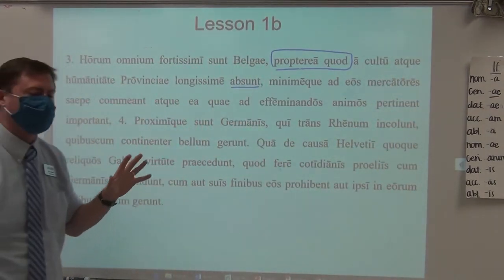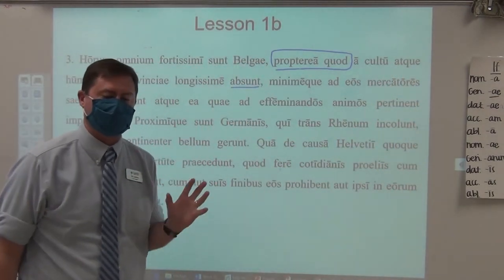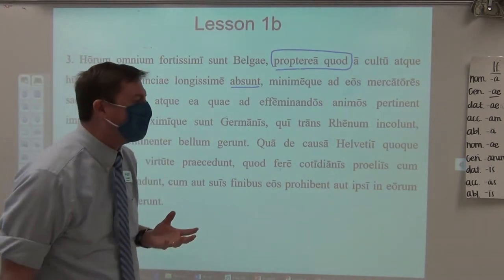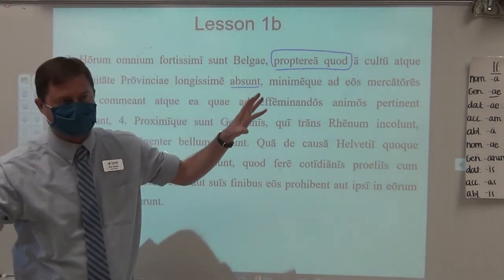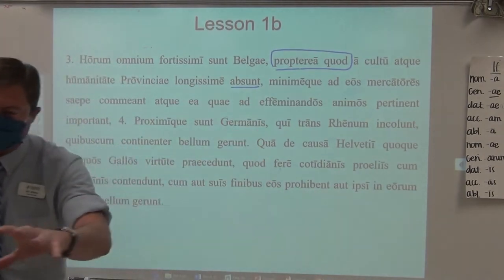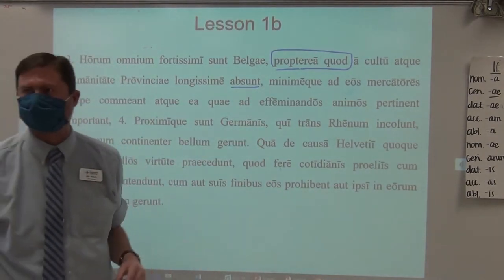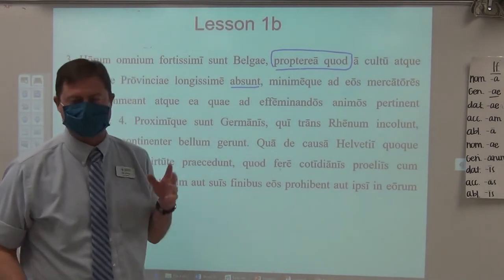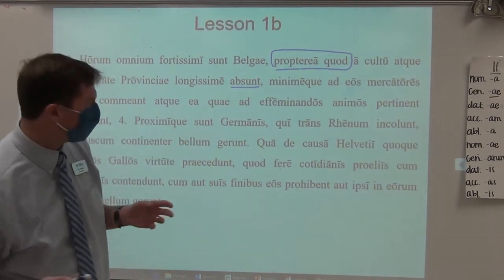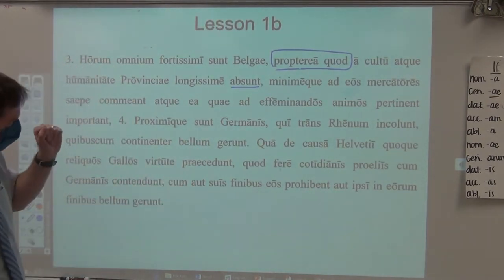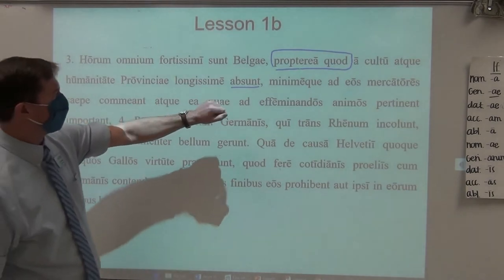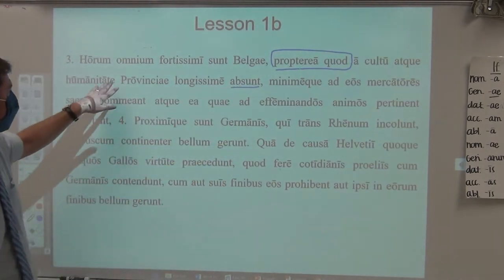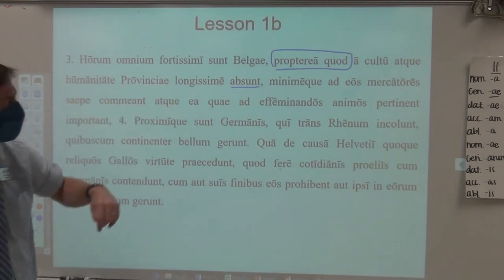The province of Gaul at the time of Caesar's beginning consulship was not all of France as we know it, but only the southern coast of France — which we nowadays call the Riviera, very famous for its vacationing amongst the elite of Europe and the very wealthy. So nevertheless, they are the toughest because, one, they are absent most longly from the province — from the humanity of the province, from the culture.